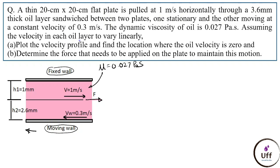The velocity in each oil layer varies linearly, so the velocity profile is linear. At the middle plate the velocity is 1 meter per second; at the fixed wall the velocity is zero, so the profile increases linearly from the fixed wall up to the plate. Near the bottom moving wall, the velocity is 0.3 meter per second directed to the left, so we consider this arrow as 0.3 meter per second. The velocity change between the two outer plates varies accordingly.